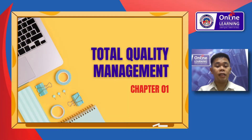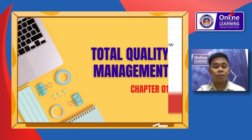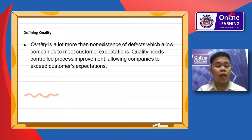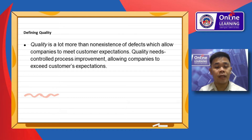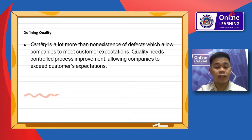Our topic for today is TQM, or Total Quality Management, under Operations Management. For Chapter 1, we are defining quality. Quality is a lot more than an existence of the fact which allows companies to meet expectations and quality needs through controlled process improvement, allowing companies to exceed customer expectations. It is very important that as an organization, you need to meet the expectations set by the organization.